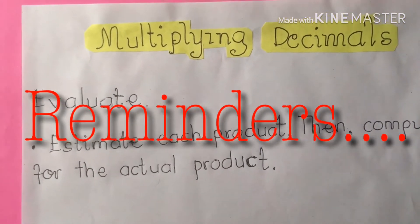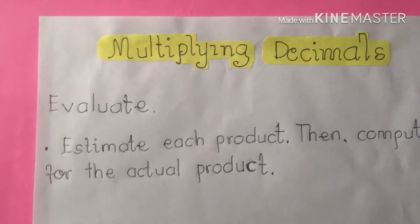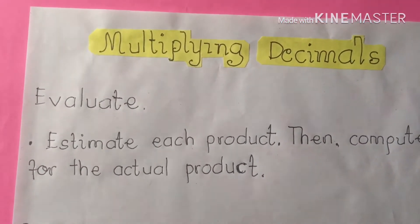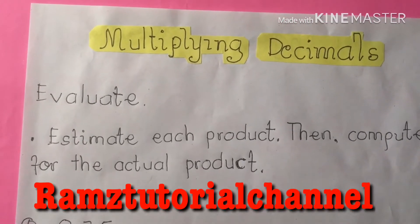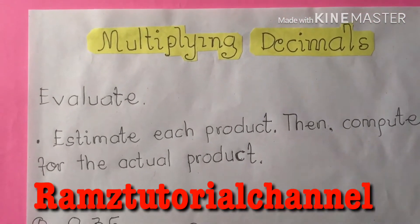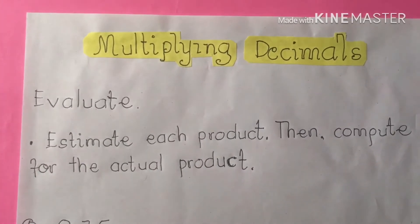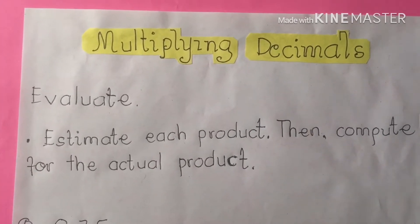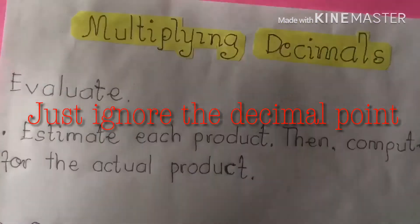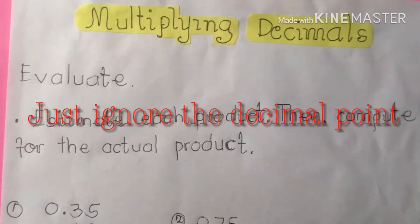How do you multiply a whole number by a decimal number? If you want to multiply a decimal by a whole number, just ignore the decimal point, and multiply like normal. Then bring the decimal point back for the answer. Okay? Here we go.